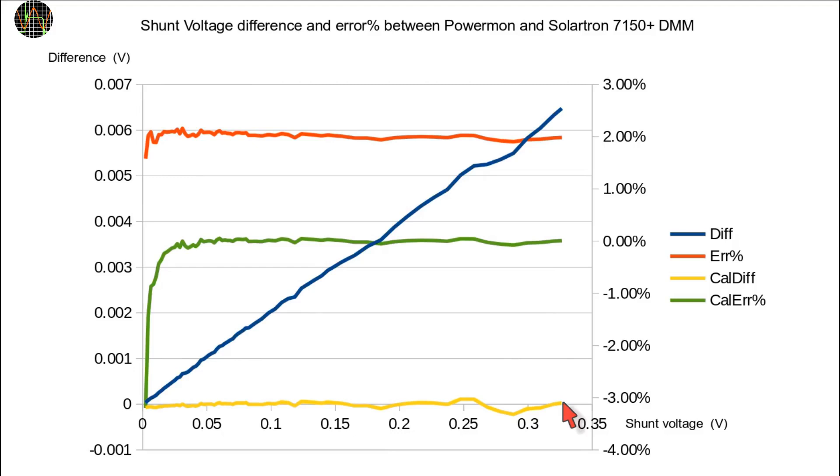So maybe it is better to do separate calibrations for each range. I should also point out that the measurements and the calculations did not use the shunt resistor value or the current flowing through it. This means we can get a calibrated and highly accurate shunt voltage independent from both.